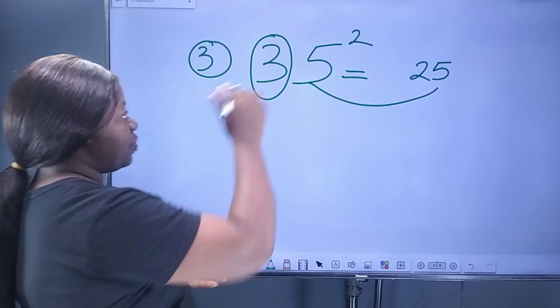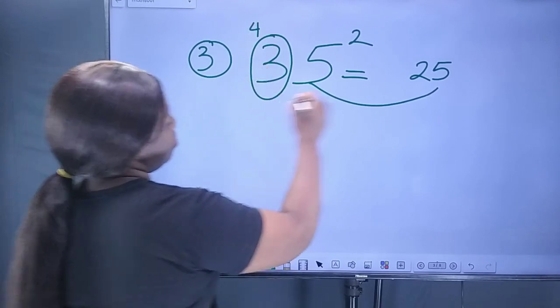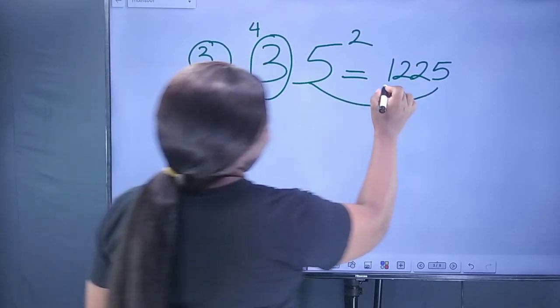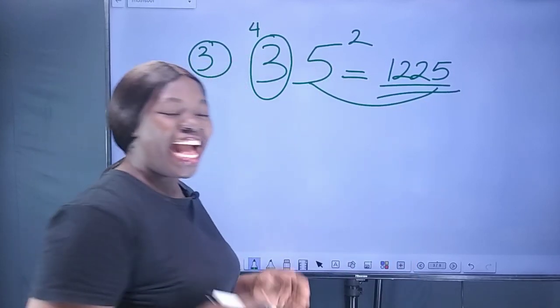After 3 comes 4. So, you have 4. So, 4 times 3 is 12. So, the square of 35 is 1225.